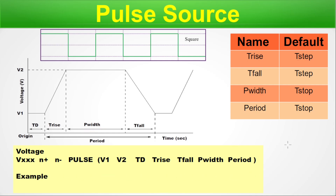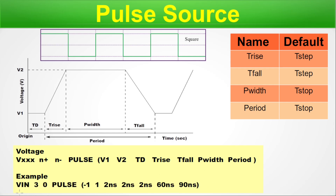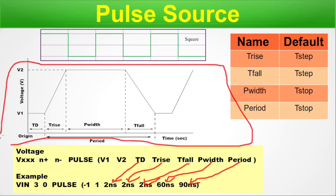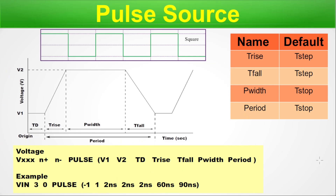Example: Vin connected between node 3 and 0, pulse source with V1 as minus 1 volt and V2 as 1 volt, TD as 2 nanoseconds, T rise as 2 nanoseconds, T fall as 2 nanoseconds, pulse width as 60 nanoseconds, and period as 90 nanoseconds. From the figure you can see which parameter corresponds to which part of the waveform. This is how we construct a pulse source.